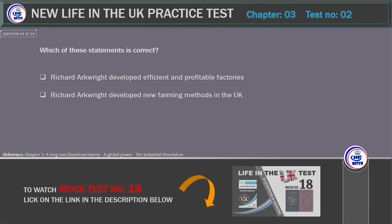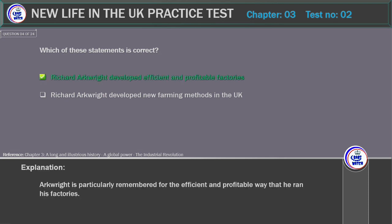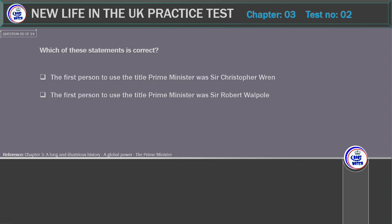Which of these statements is correct? A) Richard Arkwright developed efficient and profitable factories. B) Richard Arkwright developed new farming methods in the UK. Correct answer: Richard Arkwright developed efficient and profitable factories. Explanation: Arkwright is particularly remembered for the efficient and profitable way that he ran his factories.